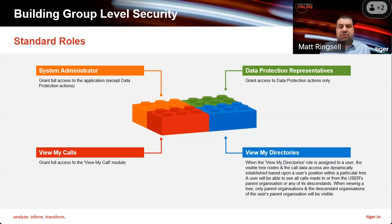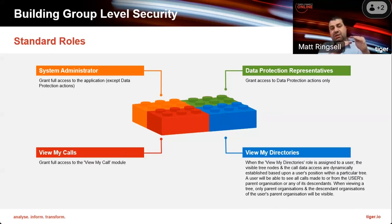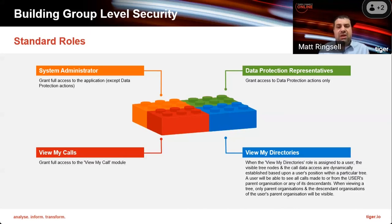There is a View My Calls role, which allows users just to see their own calls. When they log in using their View My Calls role, it will log them into the View My Activity role and show them only their own data. There is also a View My Directories role — when assigned to a user, it gives them access to CDR records in their department and any department below them in the hierarchy. These are standard roles available out of the box in every installation.